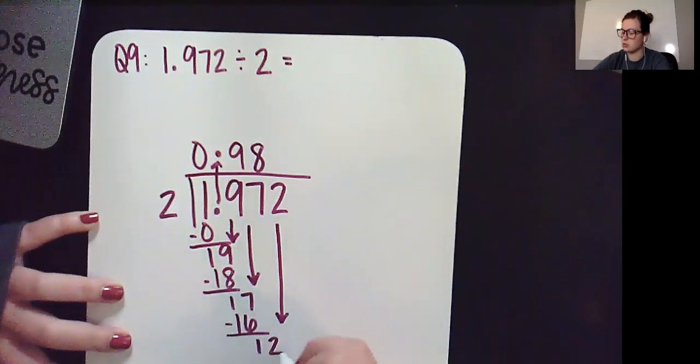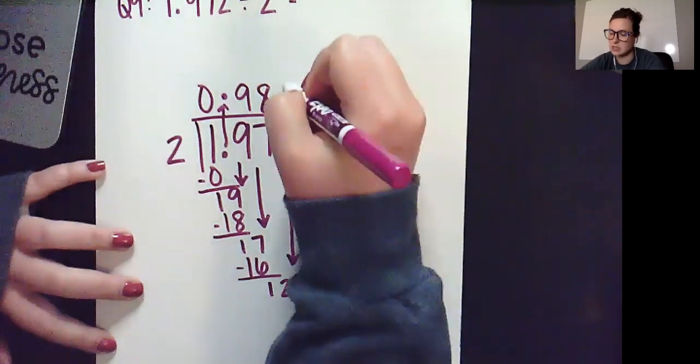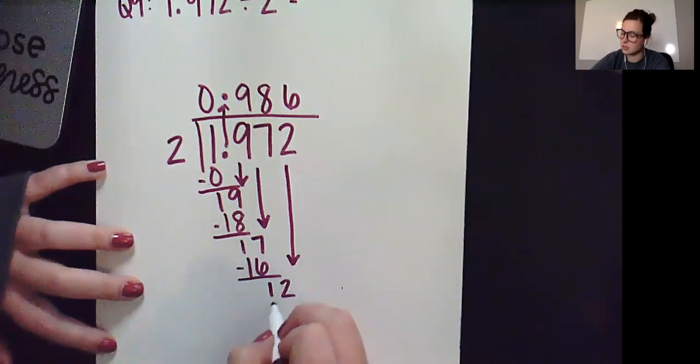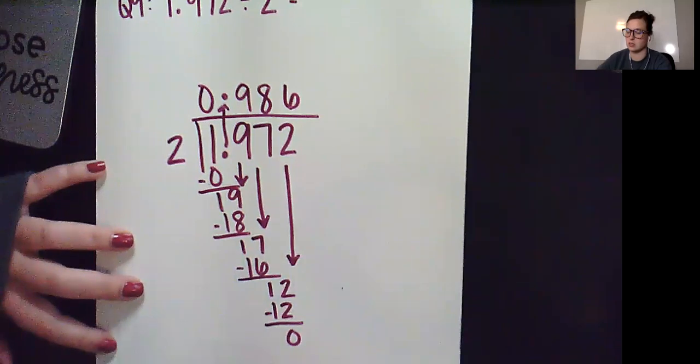Bring the 2 down. If I have 12 apples I can make 6 groups of 2. 6 times 2 is 12. Subtract and you're left with 0.